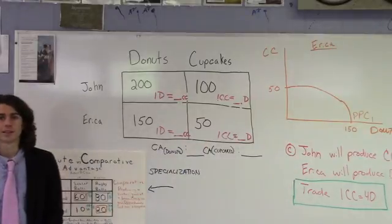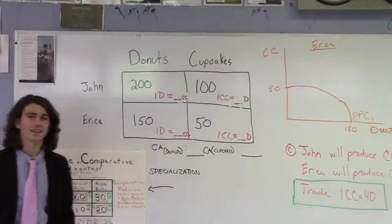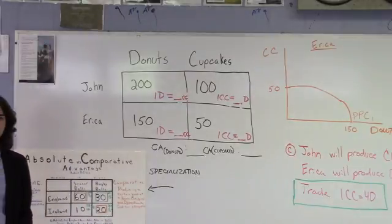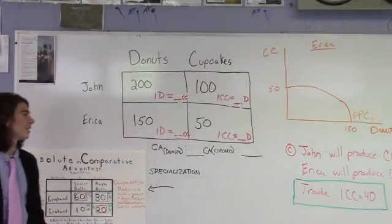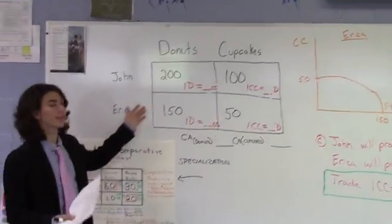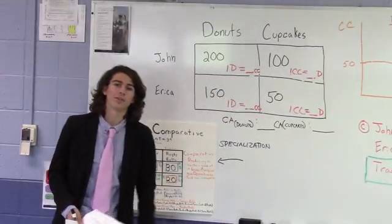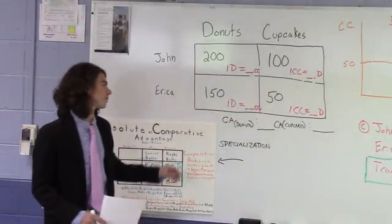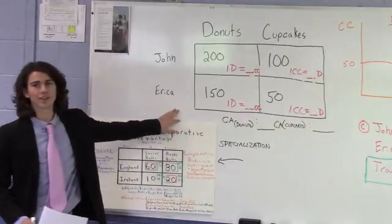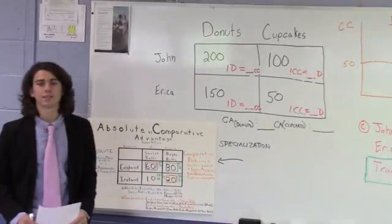So, Ryan, in this case, John is better in both, so what might we imply about John's incentive to specialize in trade? So, John actually doesn't have to specialize in trade because he has the absolute advantage in both. And, conversely, what about Erica? She has a what? So, Erica has the absolute disadvantage in both donuts, producing donuts and cupcakes. Very good.